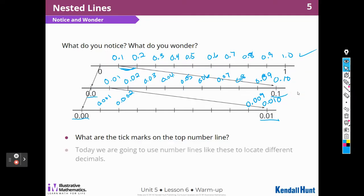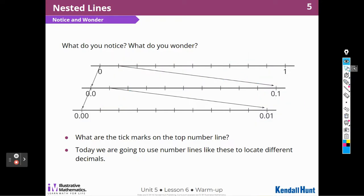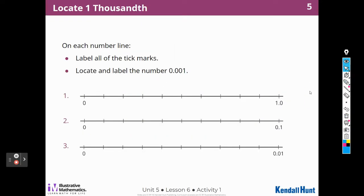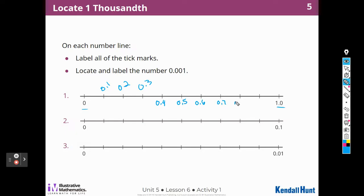So today we're going to use number lines like these to locate different decimals. On each number line, label all of the tick marks — just like what we just did. From 0 to 1, these are going to be my tenths. It doesn't matter if we write the labels on top or underneath, as long as they're labeled. Then here, from 0 to 1 tenth, these are going to be my hundredths.